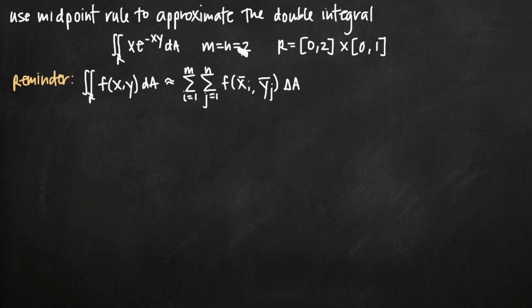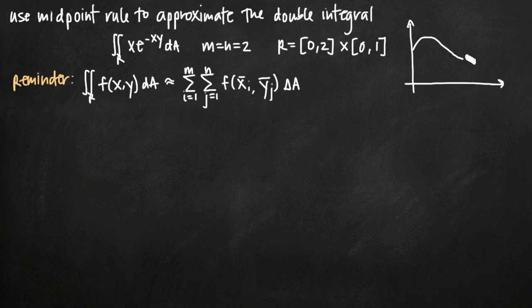Essentially what we're going to do is use midpoint rule to approximate a volume. Remember that when we were dealing with just one variable, we used midpoint rule to approximate area. We had an xy coordinate plane and some function, and we used midpoint rule to divide the region into rectangles. We would take the midpoint of each rectangle, add all those midpoint values together, and multiply by the width of each rectangle, delta x, to find the area under the curve.